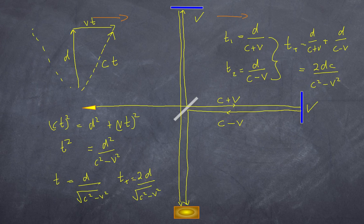Now, what is clear is that this total time here is not the same as this total time here. They're different. And that's what Michelson and Morley expected. The light beam would arrive at different times, and so you would have interference fringes.